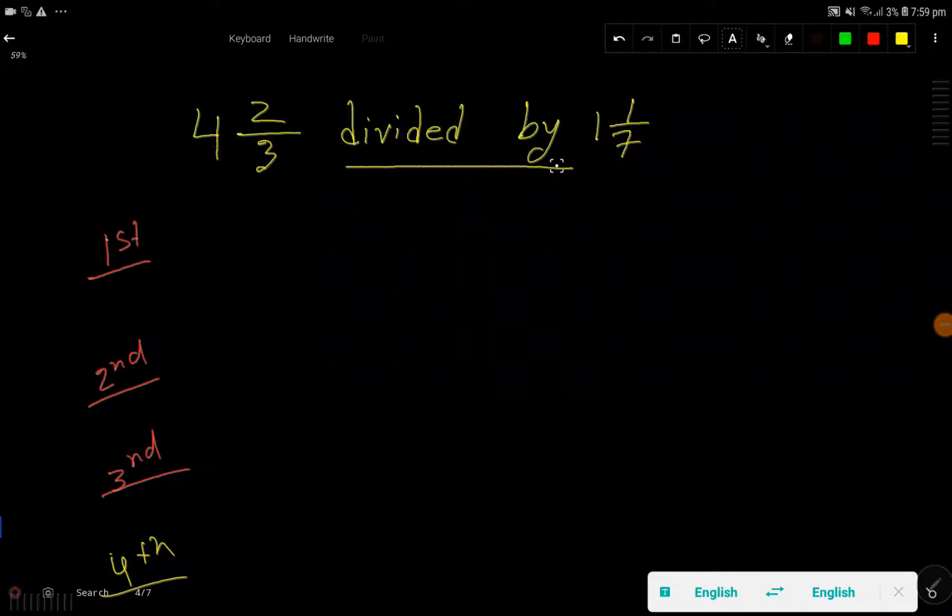Four and two-thirds divided by one and one-seventh. In the first step, I will translate this expression. Divided by means the division sign, then one and one by seven. This is a mixed number, and this is a mixed number.